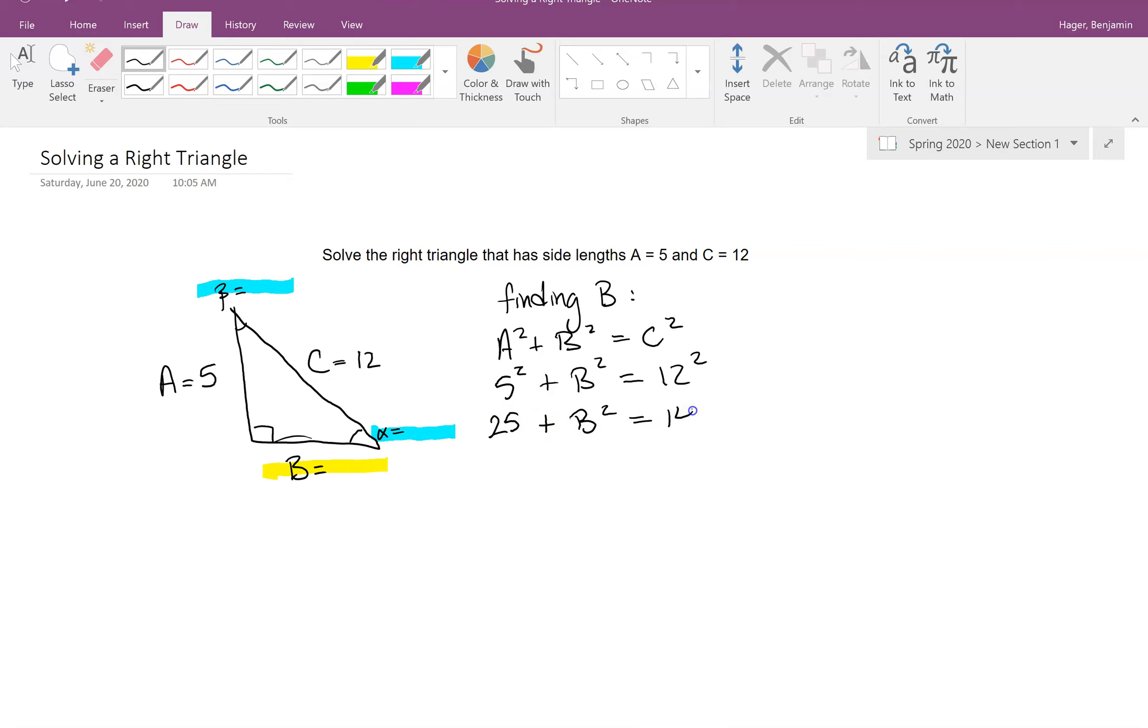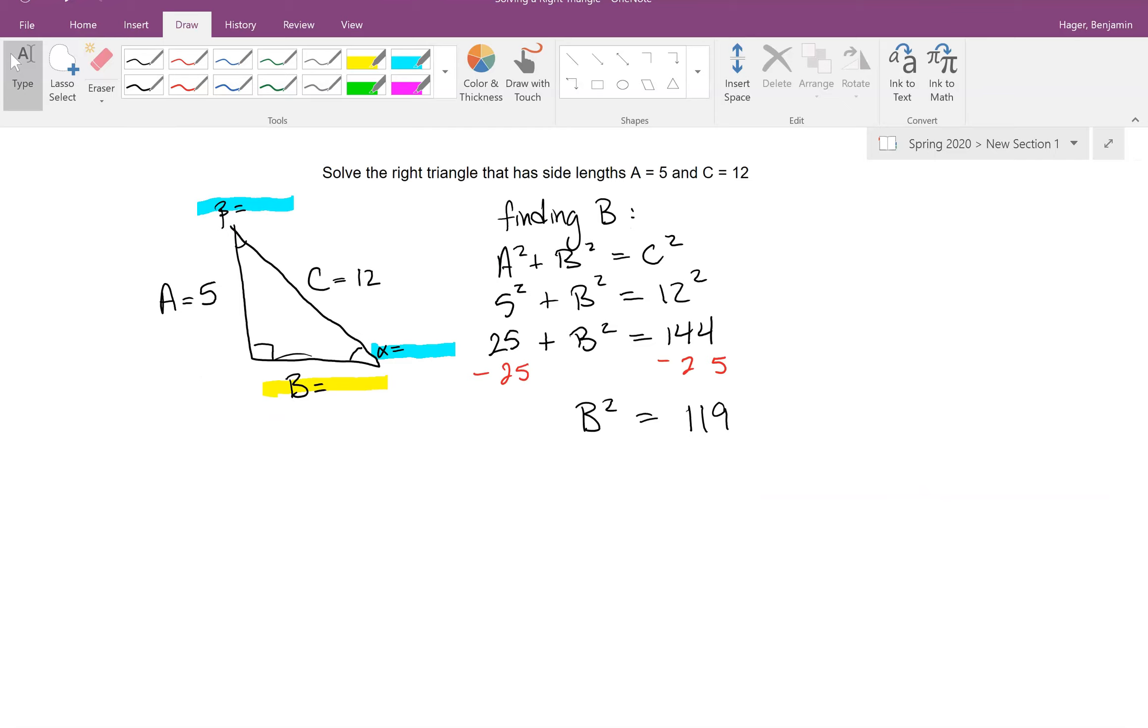And so cleaning this up, I get 25 plus B squared equals 144. And let's subtract 25 to the other side, so I get B squared equals 119.